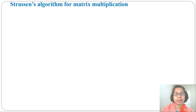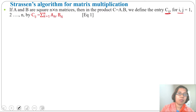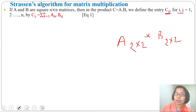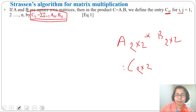Let's discuss Strassen's algorithm for matrix multiplication — this is a divide and conquer approach. Before discussing this, let's first discuss normal matrix multiplication. If A and B are square n×n matrices, then the product C = A·B defines the entry c_ij for i and j from 1 to n. The formula is: c_ij = Σ(k=1 to n) a_ik * b_kj.